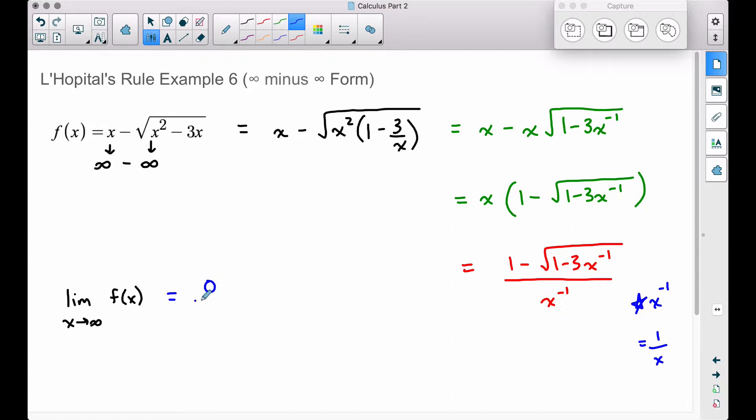1 minus the square root of 1 is 0 up top. So right now we have 0 over, and then at the bottom, let's let x get really big. x to the negative 1, same thing as this. 1 over a really big number is 0. So lo and behold, we have a 0 over 0 form.